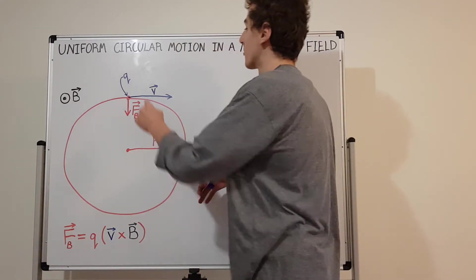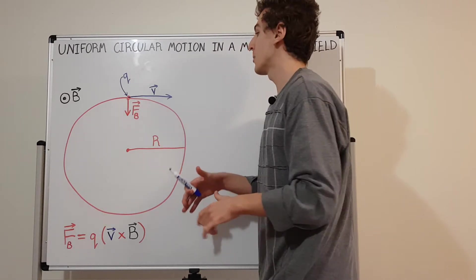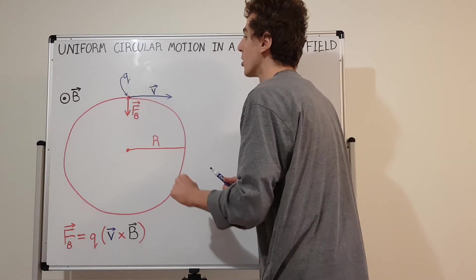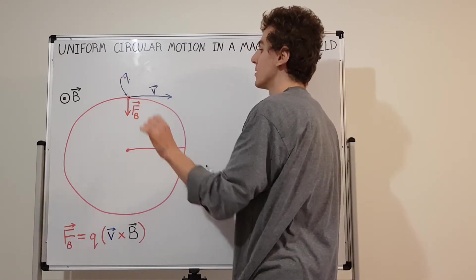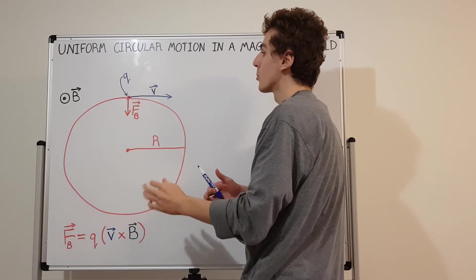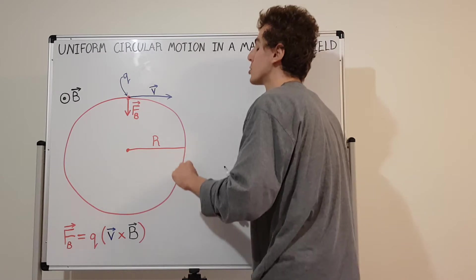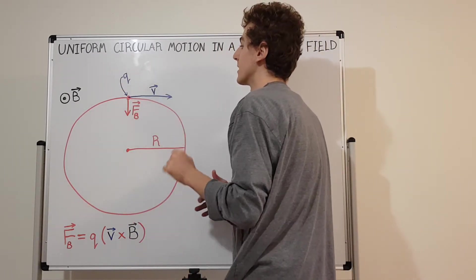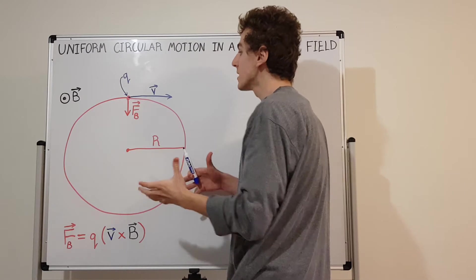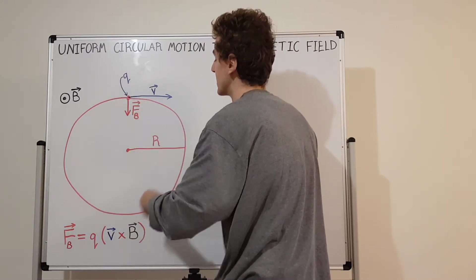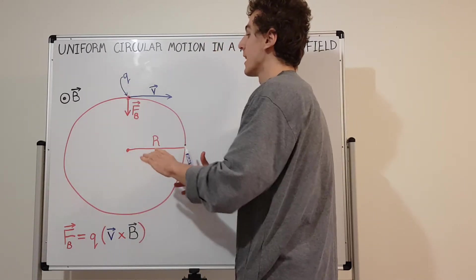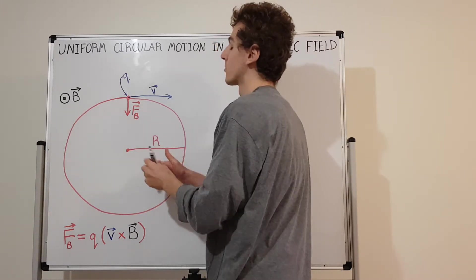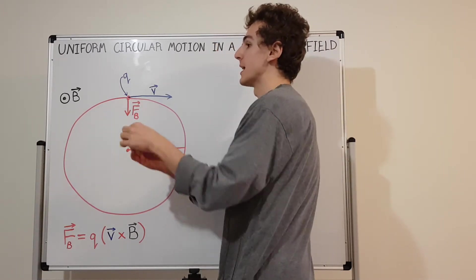It wouldn't be reasonable for the force to point outwards — that would give us a crazy result. If you change the sign of this charge Q to negative, you'll still get circular motion but it will just be in the opposite direction. Because this sign convention is positive, it's going around in this direction. You'll also get a flip in the direction of rotation if you change this B field from pointing out of the board to into the board.